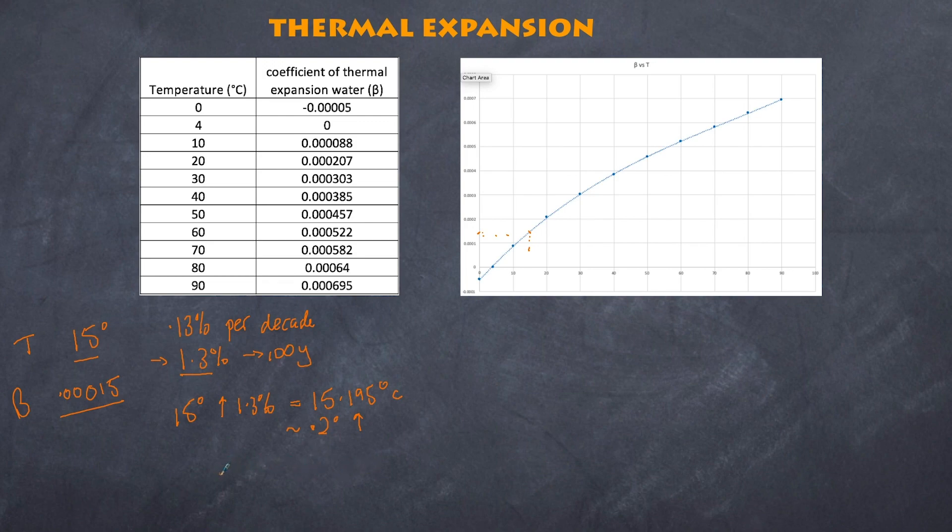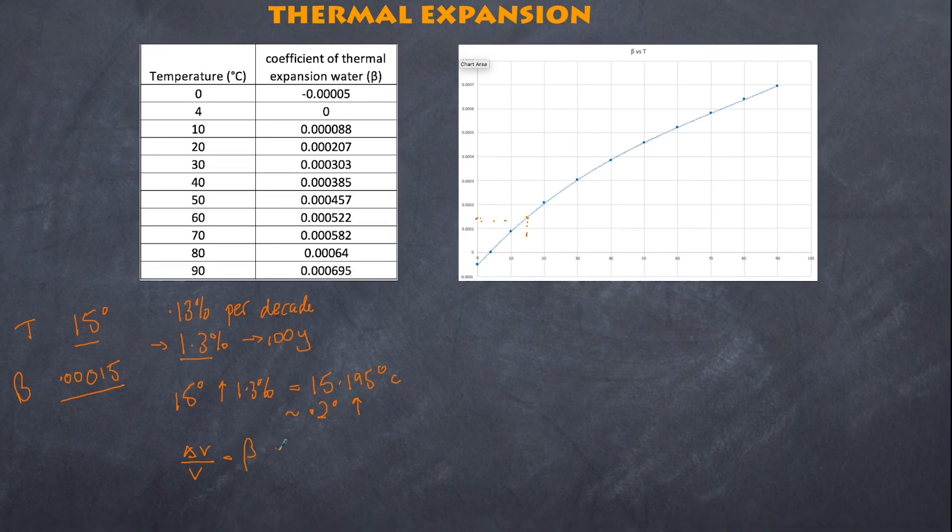Now what we want to do is work out the change in volume as a fraction. So the change of volume over the original volume gives us our coefficient of thermal expansion multiplied by the change in temperature, which we just worked out is 0.2. That means we have 0.00015 multiplied by 0.2, and I'm going to get a value of 3 by 10 to the power of negative 5. That is the fractional increase in terms of the volume. That's not a lot. If I multiply this by 100, we have 3 by 10 to the power of negative 3. That's my percentage increase, or 0.003% increase in volume. That's not a lot from this perspective, but let's place a scenario to help us appreciate what might happen.